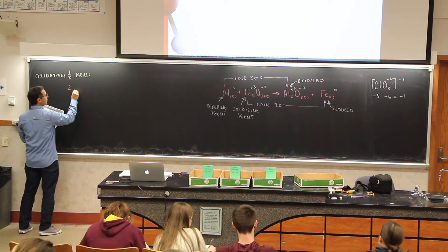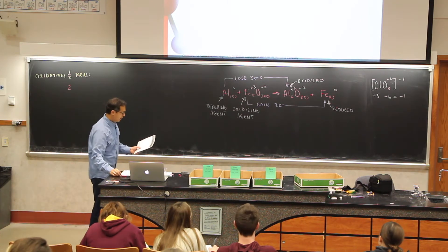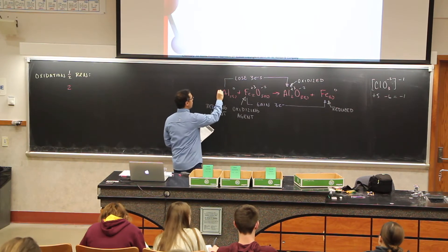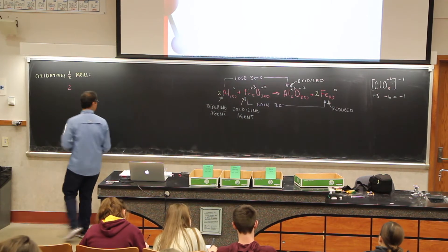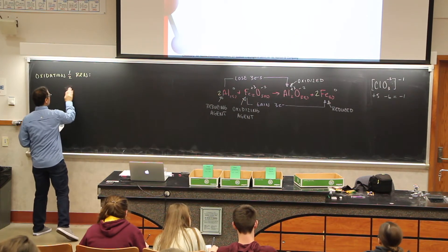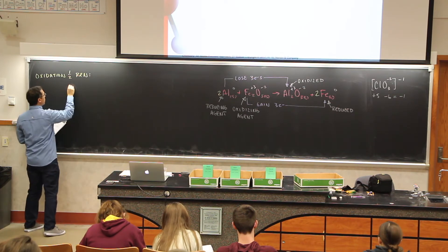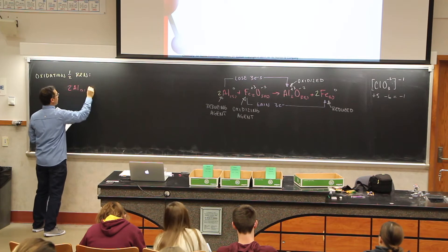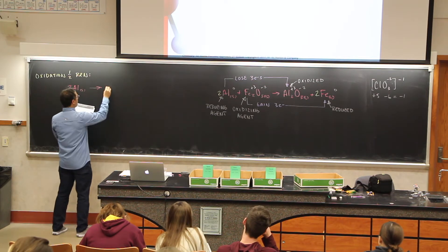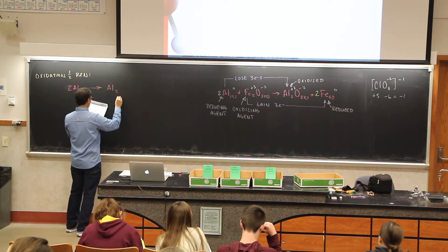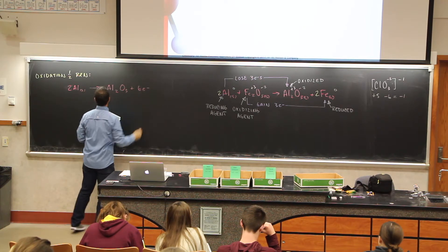For this reaction we would say that the oxidation half reaction, we're going to look at what's been oxidized here and that's going to be our aluminum. So we have two aluminums. Did I balance that equation there? I don't think I did. I need to put a two here and a two over there.